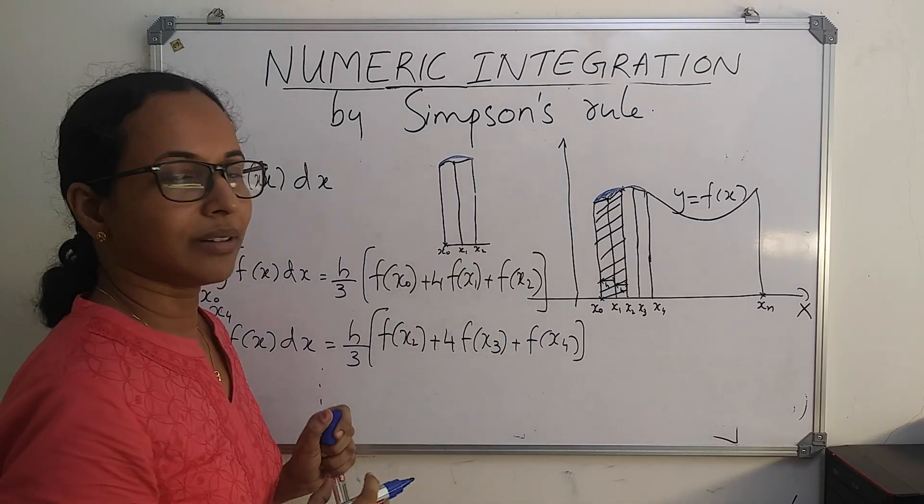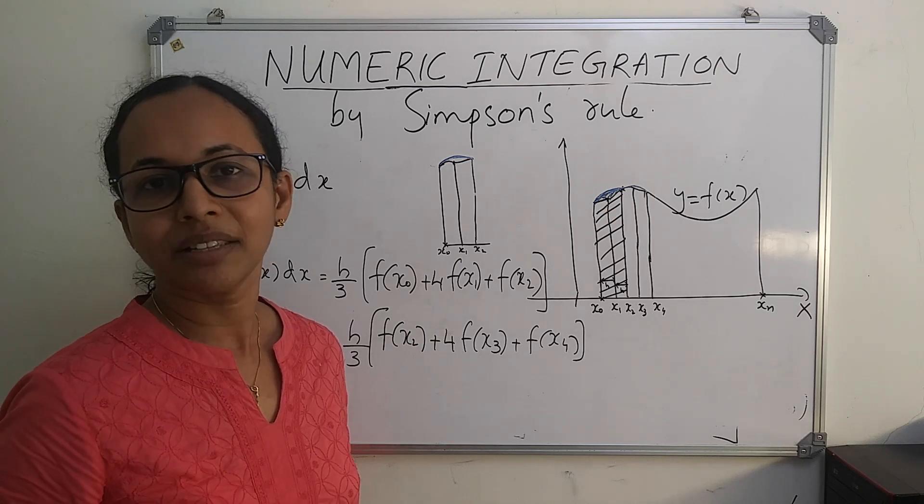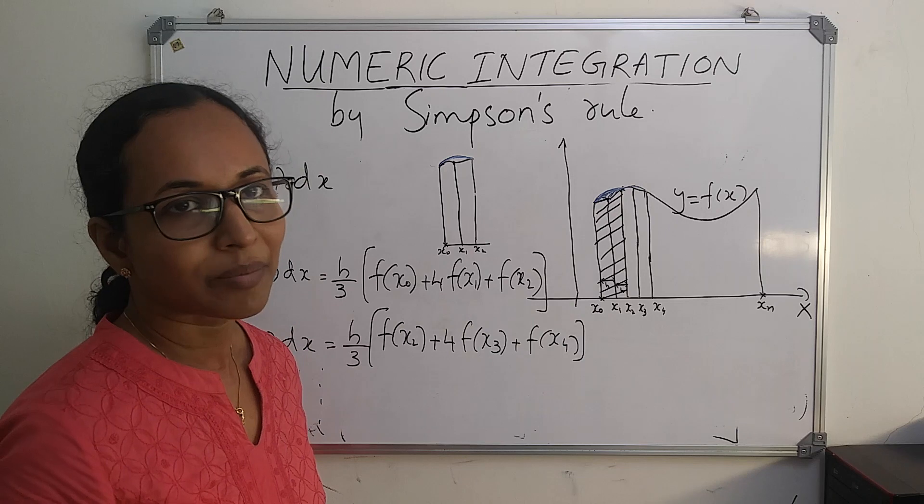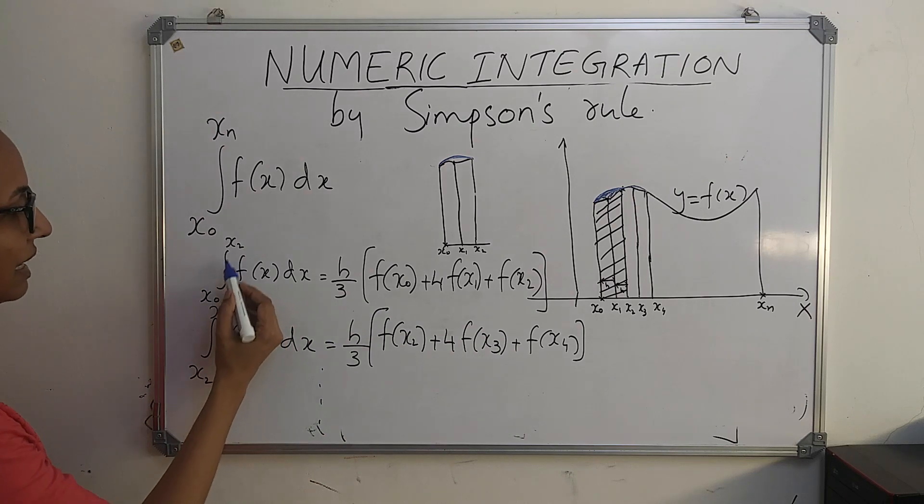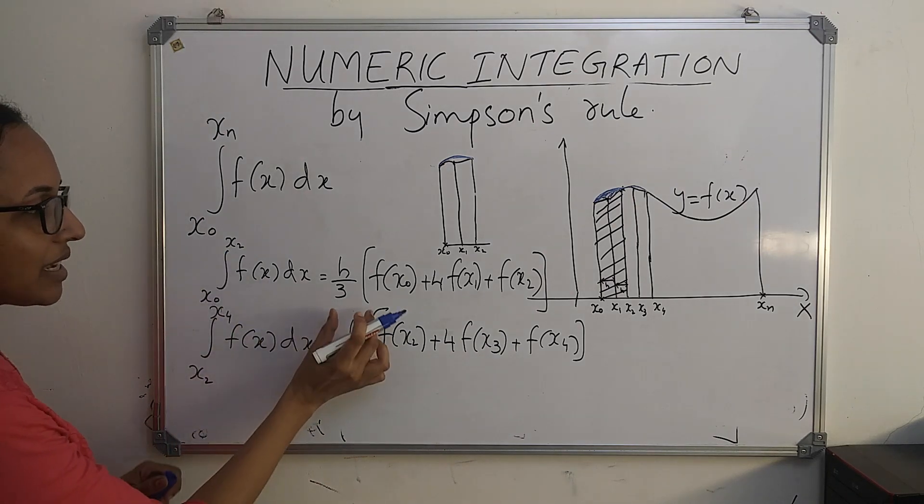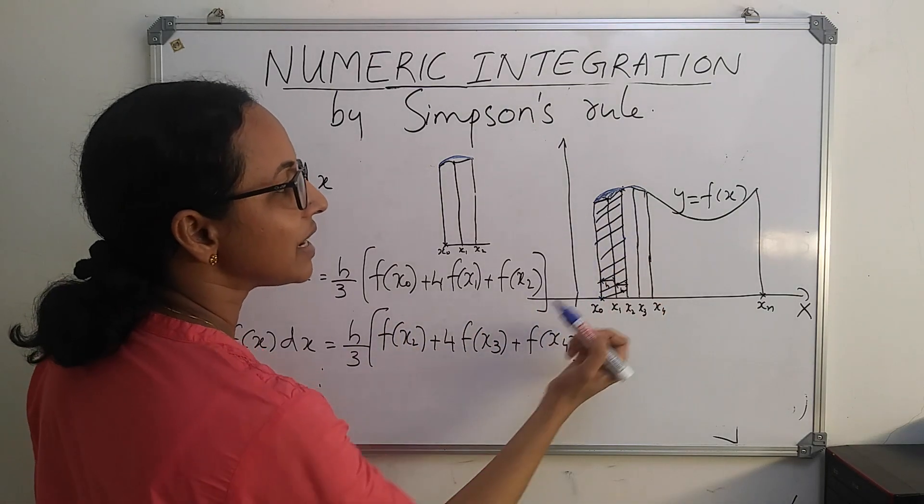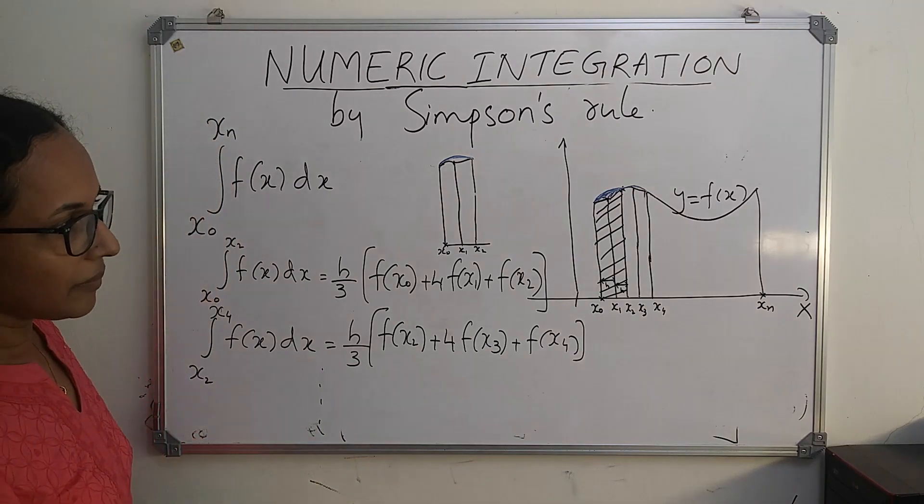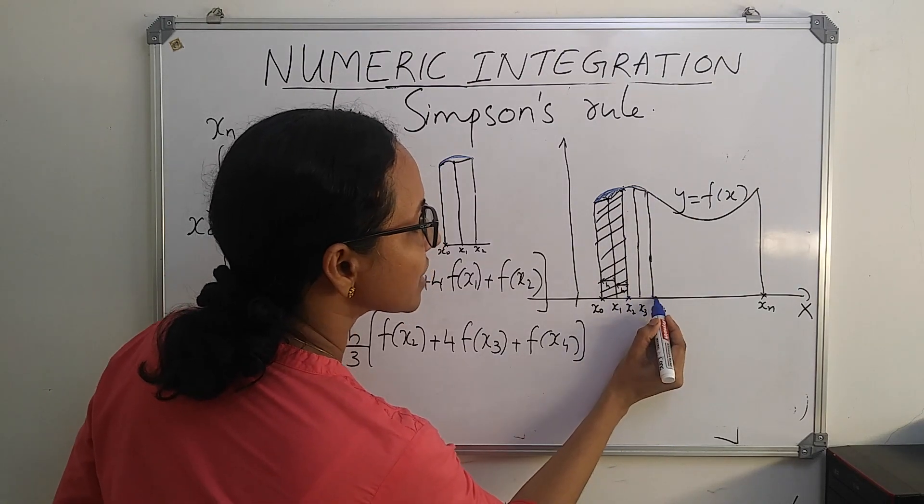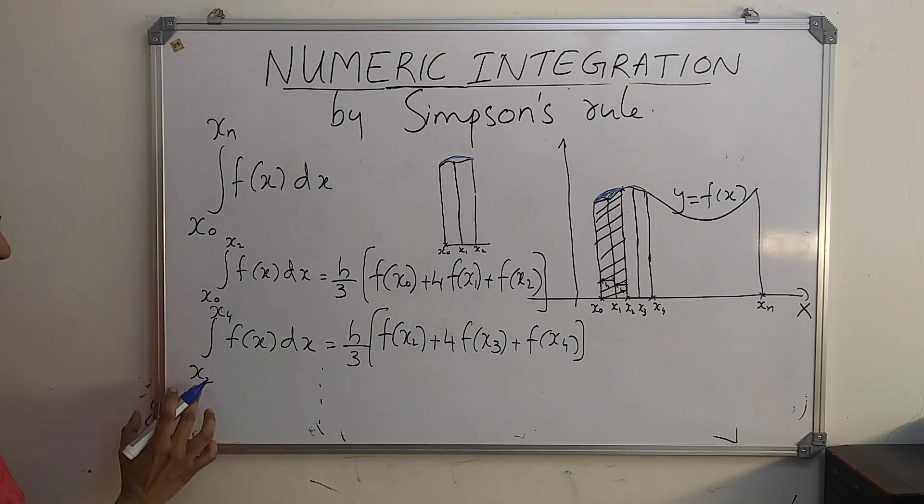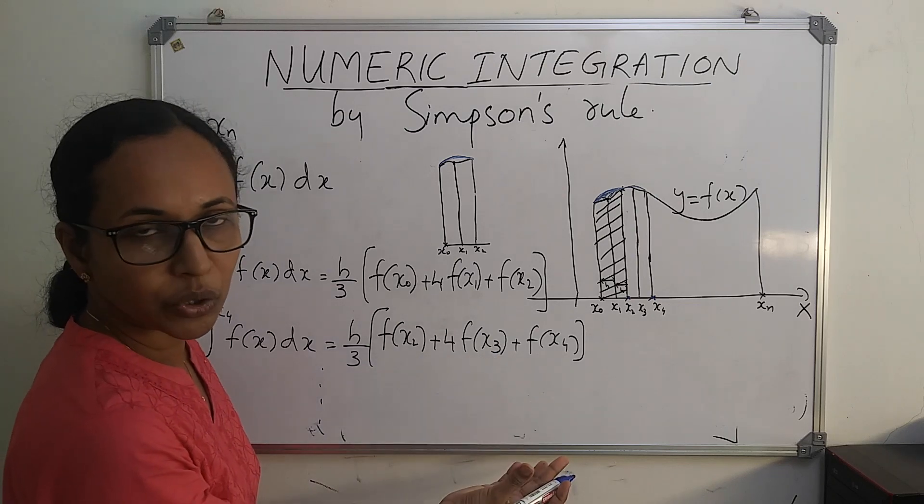We can obtain this one by using a formula called Newton-Cotes formula, which is outside the scope of this discussion. By using Newton-Cotes formula, we can find that integral from x0 to x2 f(x) dx will be h by 3 into this term, which is the area of this shaded region. Similarly, by considering the next two subregions from x2 to x4, we can evaluate this integral using Newton-Cotes formula again.